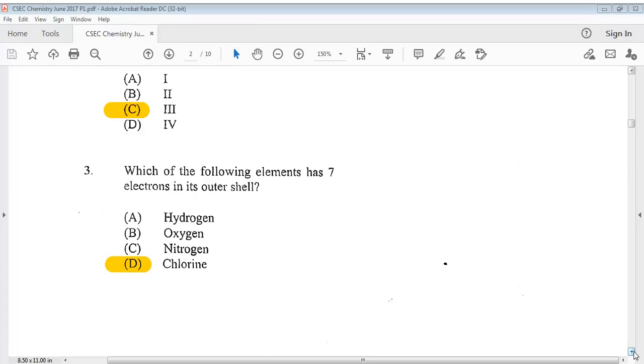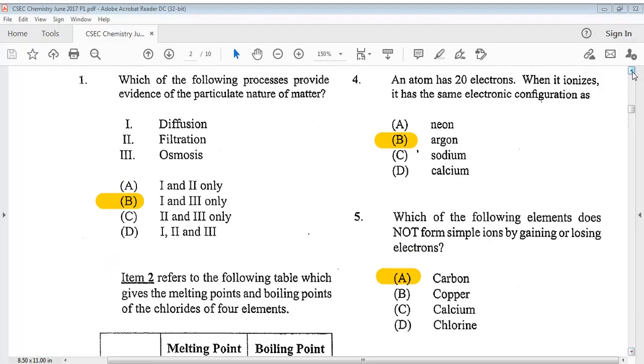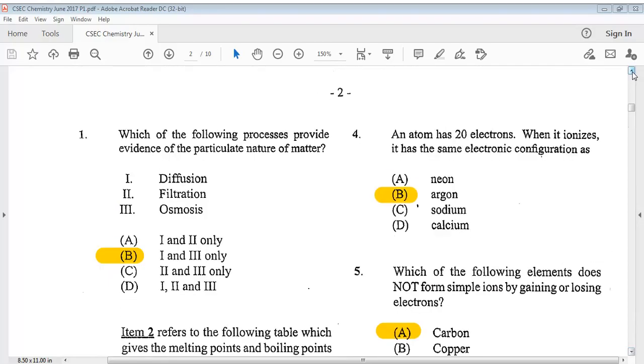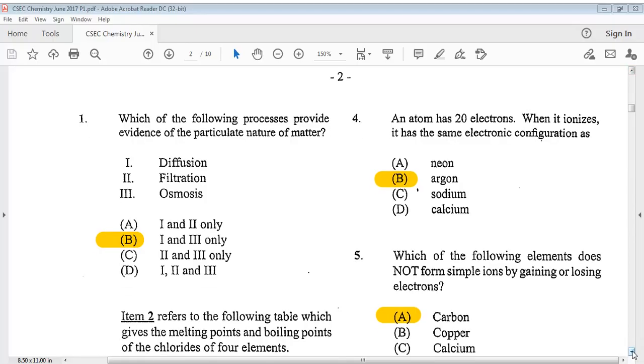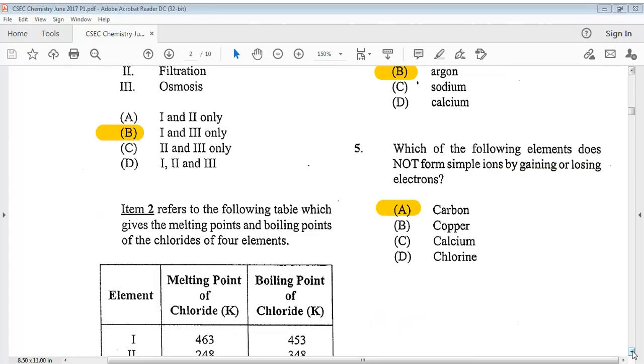Question 3. An atom has 20 electrons. When it ionizes, it has the same electronic configuration as the answer is B, argon. Question 4 says, which of the following elements does not form simple ions by gaining or losing electrons? The answer is A, carbon.